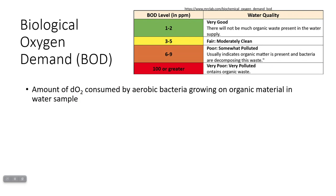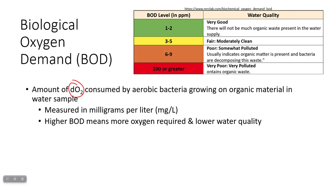Another way to measure how effective water treatment is: we can measure something called biological oxygen demand, or BOD. It represents how much dissolved oxygen is going to be consumed by bacteria as they break down whatever organic material is in the sample. It's measured in milligrams per liter, and the higher your BOD is, the more oxygen is going to be required to break down whatever material is in your water.